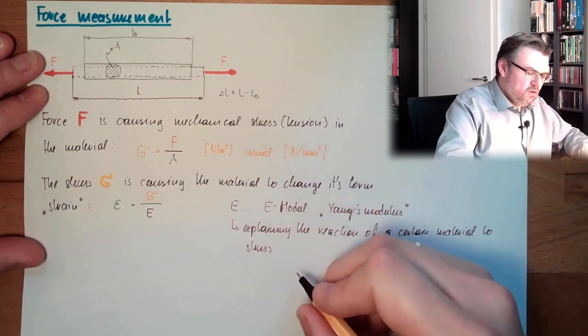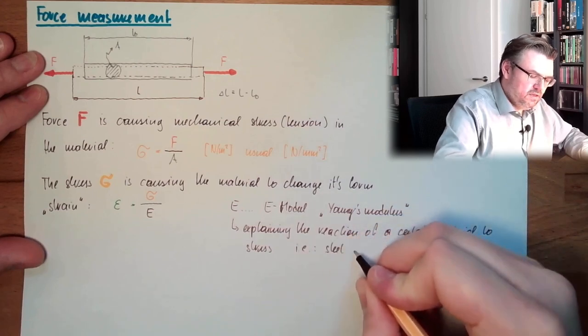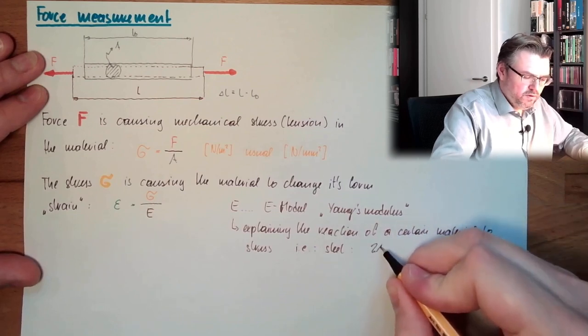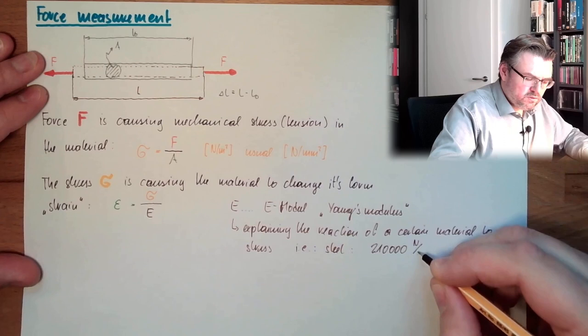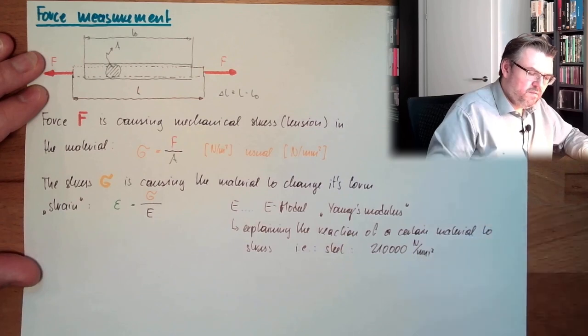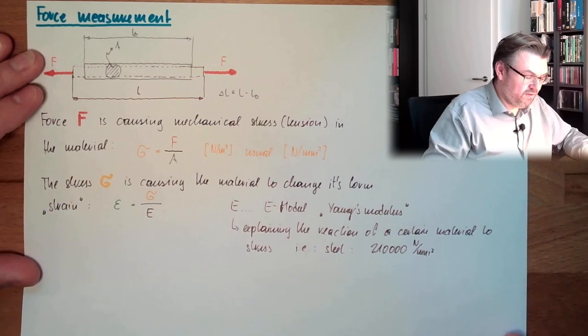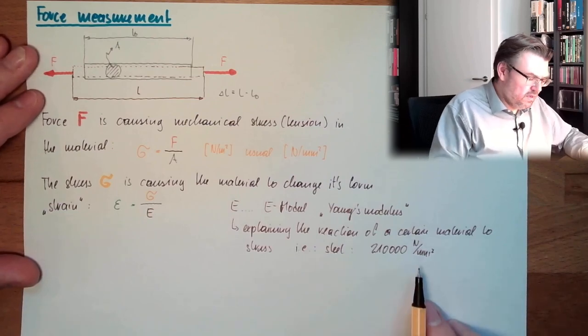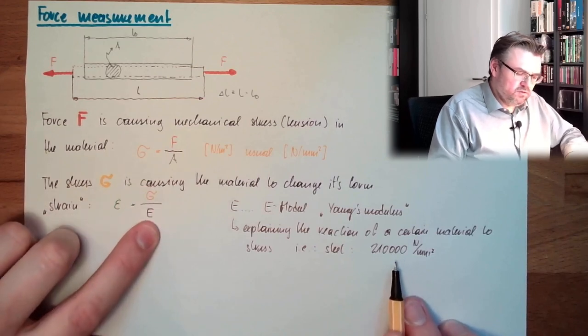And for instance, in example, steel, plain steel, has an E, Young's modulus, of 210,000. What's the unit? Newton by square millimeter. Here, this rubber band would have around 0.02 or something like this. And hey, this sigma has newton by square millimeter, this E-modulus has newton by square millimeter.